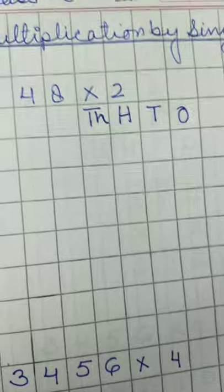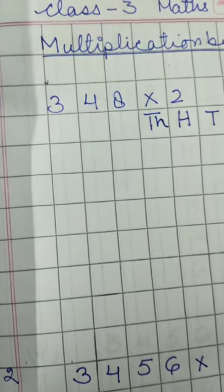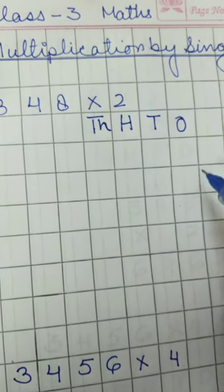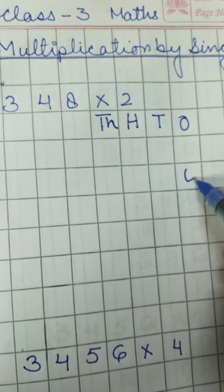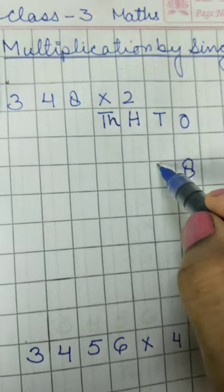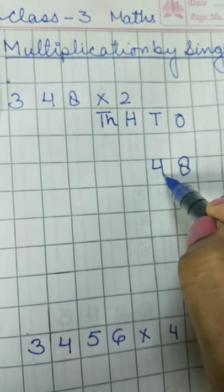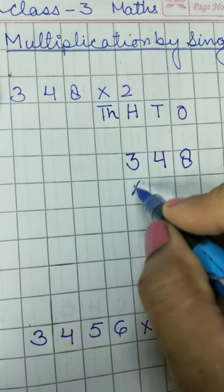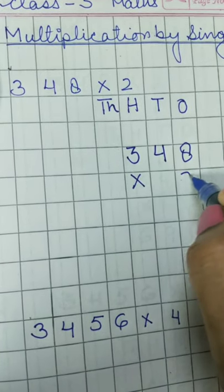Our first sum here is 348. Again we will start from ones: 8, 4, 3, multiply by 2.